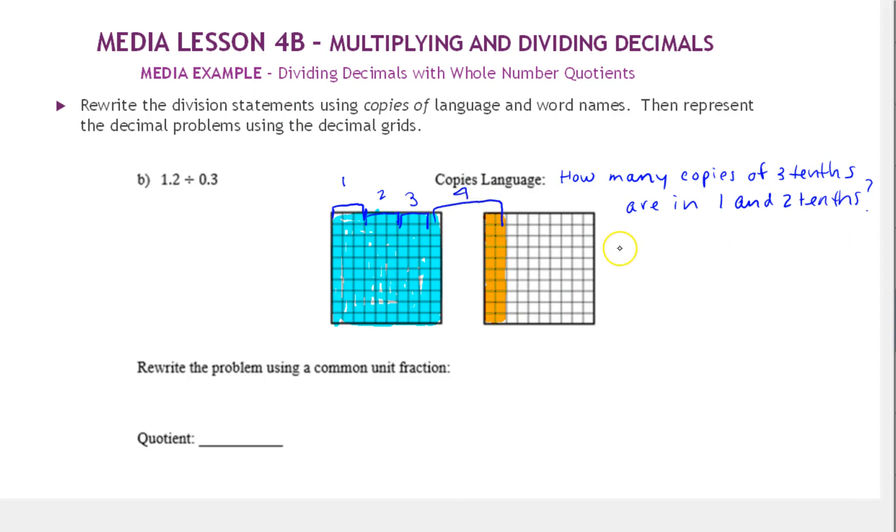So there's 4 copies of 3 tenths in 1.2. So notice it's the same results as the last problem. Our quotient is 4.